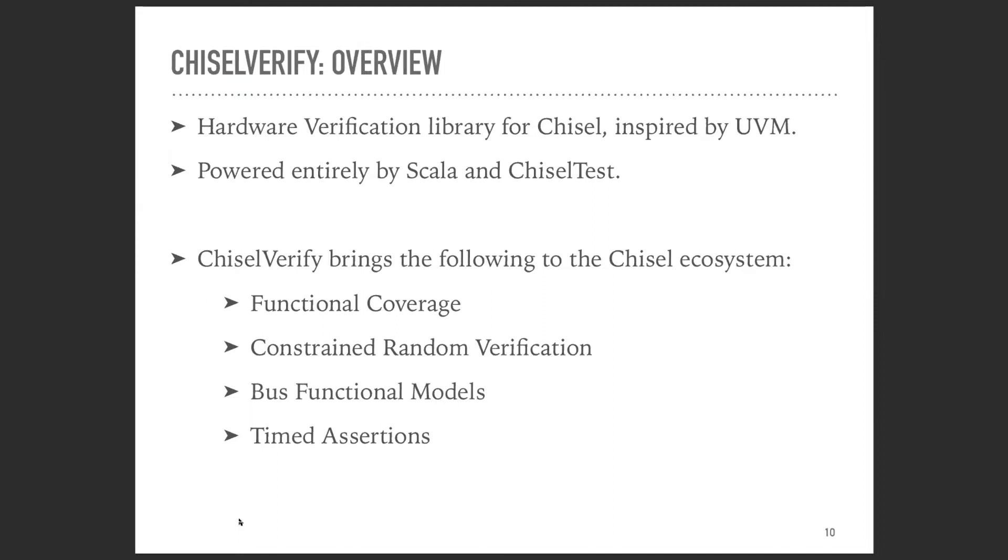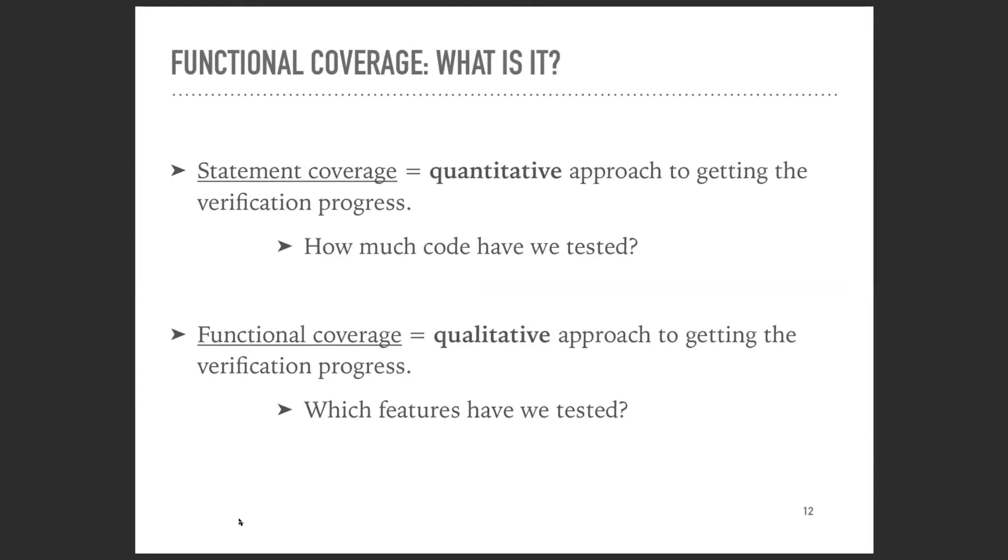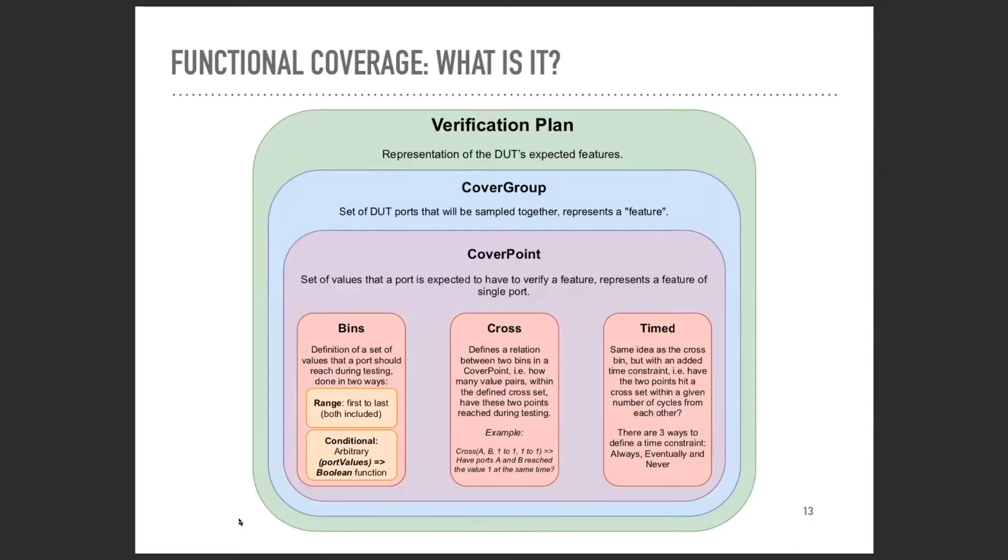Let's go into detail on functional coverage. First, we have two main ways to look at coverage: the quantitative approach, checking how much code have we tested, and the qualitative approach, which is what functional coverage is - which features have we actually tested? A way to do this is by defining what's called a verification plan. This verification plan is supposed to represent our DUT's functionalities, like an in-test version of our specification. The verification plan is comprised of cover groups, which are each comprised of cover points, which each contain bins. The coverage percentage is computed using the amount of hits that a bin gets.